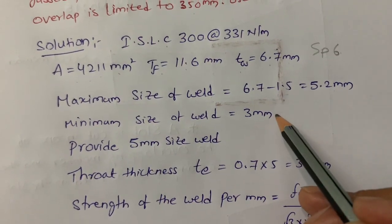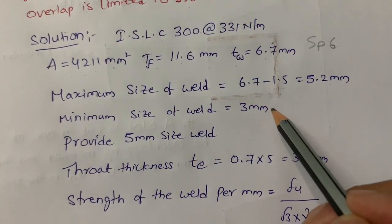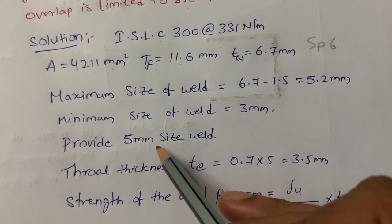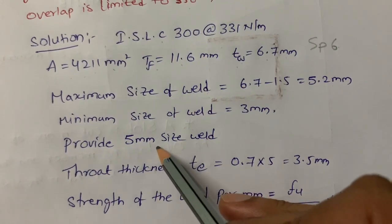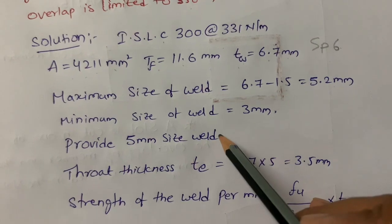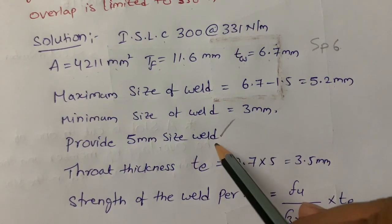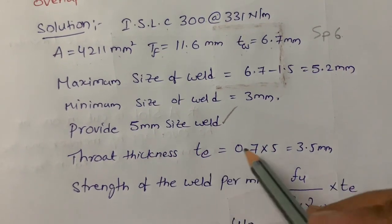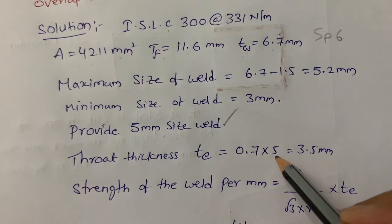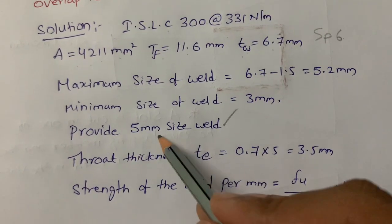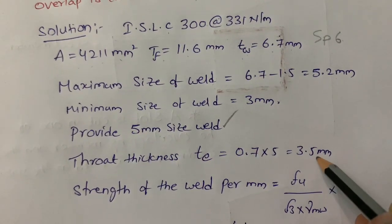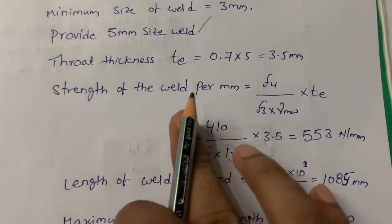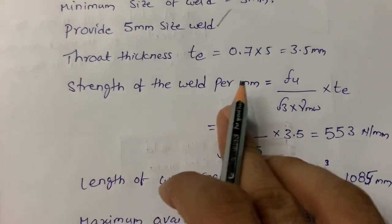Provide 5 mm size weld. Throat thickness formula: 0.7 × s = 0.7 × 5 = 3.5 mm. After that we find the strength of the weld per mm.